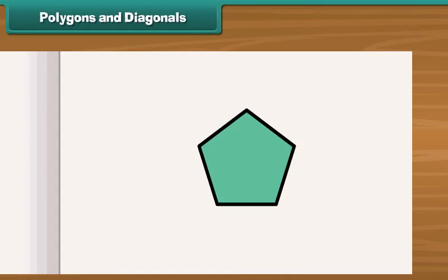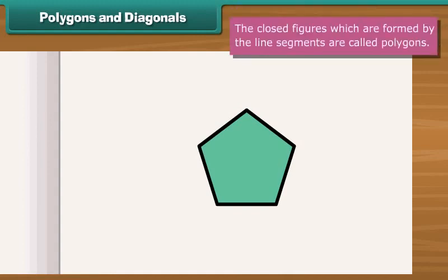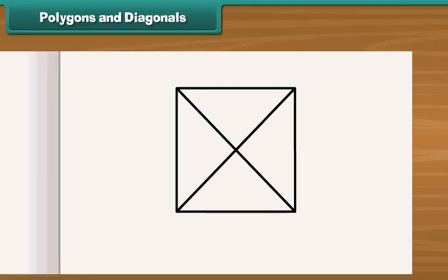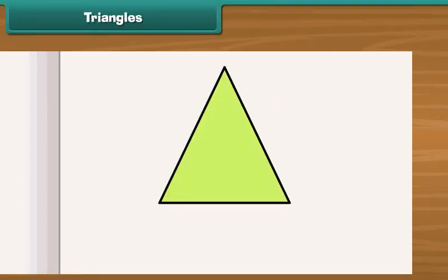Look at these closed figures. These are formed by the line segments. The closed figures which are formed by the line segments are called polygons. The line segment of a polygon is called its side. The point where two line segments meet is called its vertex. What will you call these line segments? The line segments drawn from one vertex to another vertex are called diagonals. A side of a polygon is not a diagonal.